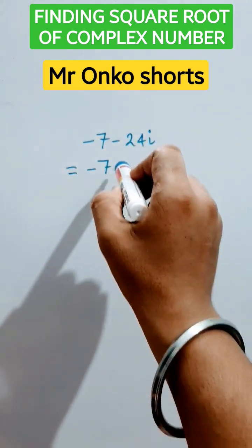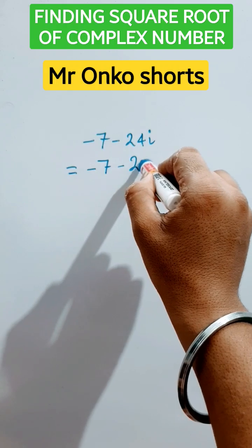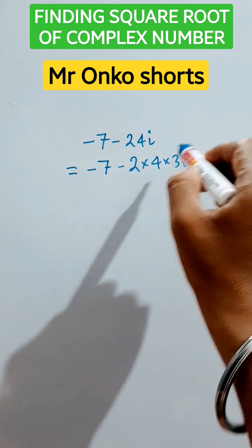So first write minus 7 as it is. Now we have to make 2ab pattern from here. So 2 into 12i. So 12 can be factorized as 3 into 4 into i.